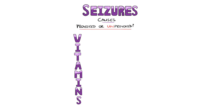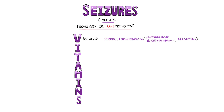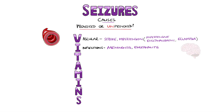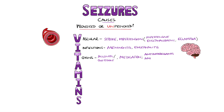Seizures can be divided into provoked and unprovoked seizures. The mnemonic VITAMINS can be used to remember the causes. V is for vascular causes, including hemorrhagic and, less commonly, embolic stroke, although seizures are often a complication of embolic stroke. We also include hypertension, both as hypertensive encephalopathy and as eclampsia in pregnancy. I is for infections, which includes meningitis and encephalitis. T is for toxins, which includes drugs such as alcohol and cocaine, as well as overdoses, but also includes medications such as antidepressants and antipsychotics.